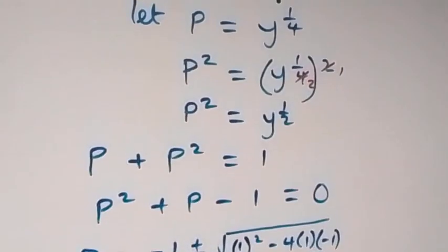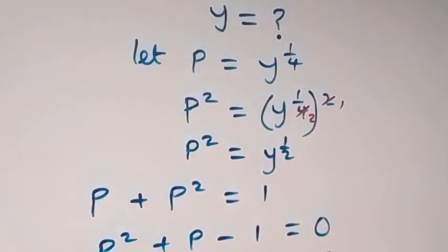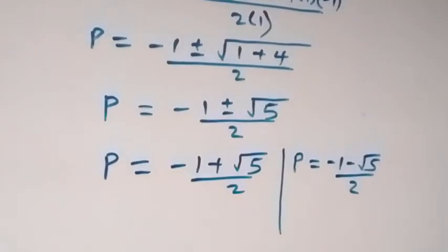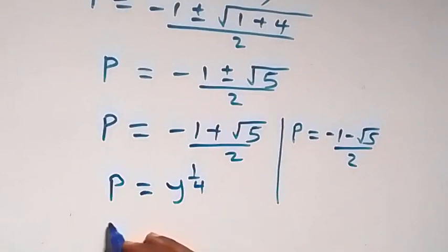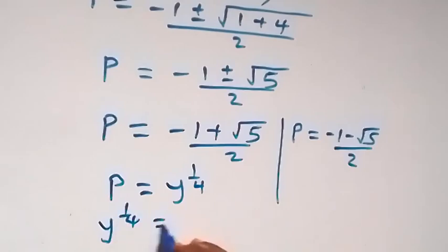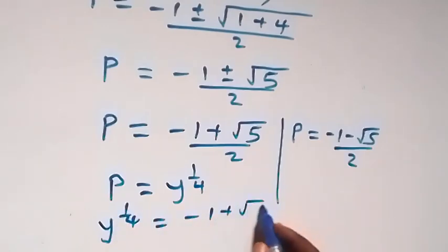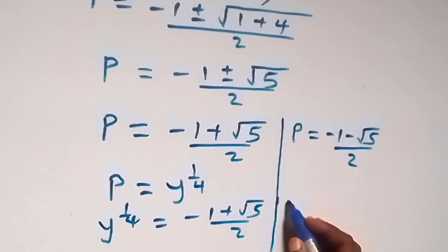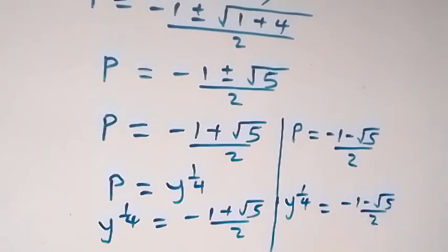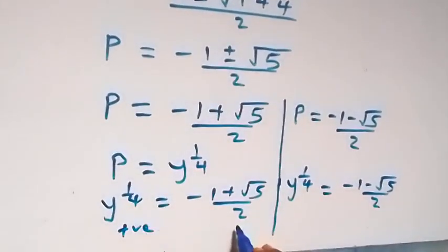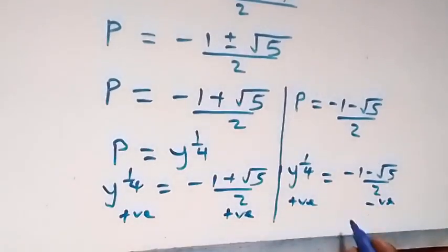We represent p as y raised to power 1 over 4. It implies that y raised to power 1 over 4, which is p, cannot be negative — so this is expected to be positive. When we equate, y raised to power 1 over 4 equals to minus 1 plus root of 5 over 2 on one side, and y raised to power 1 over 4 equals to minus 1 minus root of 5 over 2 on the other side. This first side is positive, but this second side is negative, so there is no solution on the negative side.